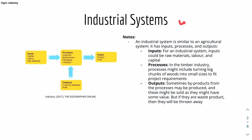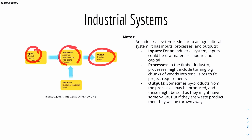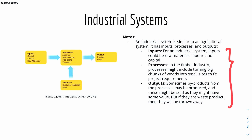Starting with industrial systems. An industrial system is similar to the agricultural system we looked at in the last video, where there's an input, process, and output. In terms of an industrial system, the inputs include raw materials, labour, and capital — or basically money.